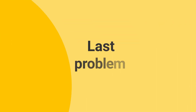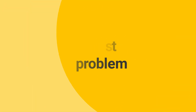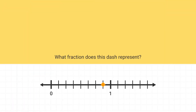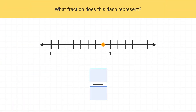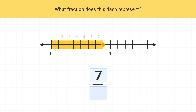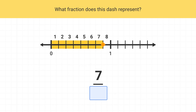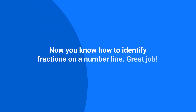Now here's your last problem for this video. What fraction does this dash represent? This dash contains seven shaded parts, so the numerator is seven. Then we can look at one whole, and see it's split into eight total parts. The denominator is eight. Therefore, this dash represents the fraction seven-eighths. Now you know how to identify fractions on a number line. Great job!